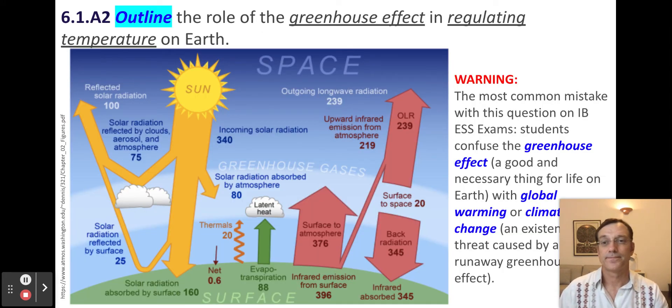Outline the role of the greenhouse effect in regulating Earth's temperature. If there weren't an atmosphere on our planet, our planet would be much colder than it is today. And again, I'm going to remind you, don't confuse the greenhouse effect with global warming or climate change. They are related, but distinctly different.